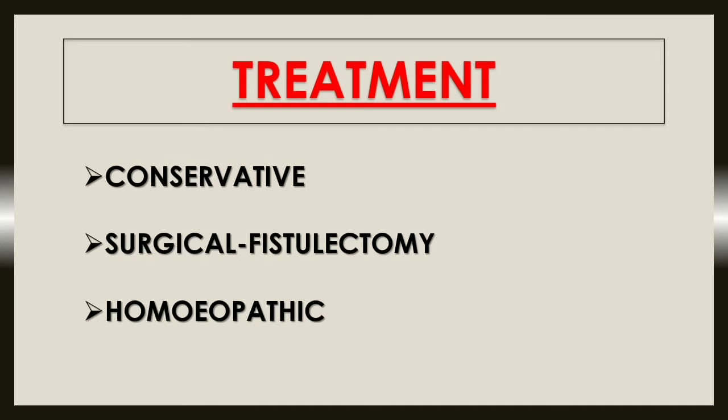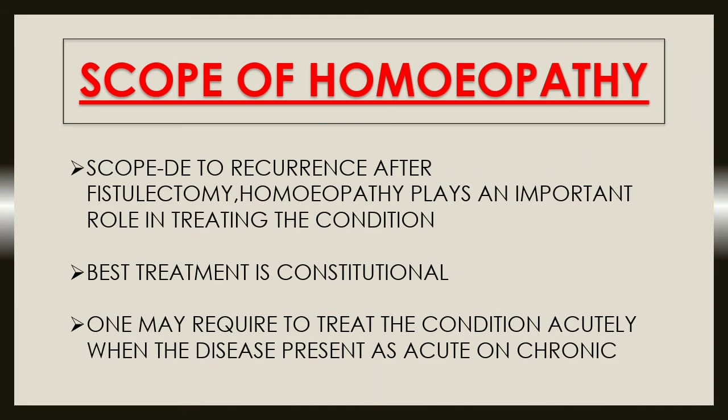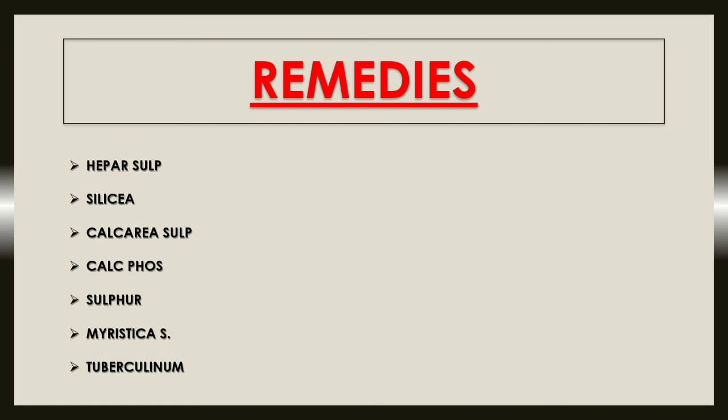Moving on to treatment of fistula. Treatment is divided into three categories: conservative, surgical (fistulectomy), and homeopathic. There is scope of homeopathy because of recurrence of fistula; homeopathy plays an important role in treating the fistula. Best treatment will be constitutional, but one may require to treat the condition acutely when the disease presents as acute on chronic. Some of the therapeutics are Hepar Sulph, Silicea, Calcarea Sulph, Calcarea Phos, Sulphur, Myristica, and Tuberculinum.